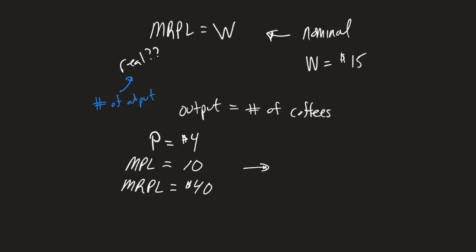Now let's say that we change that price. There's an increase in demand, so the price of a cup of coffee goes to $5. But let's say everything else stays the same. My marginal product of labor is 10 and my marginal revenue product of labor is now $50. Notice that I'm bringing in more money with this extra worker. However, they haven't become more productive — it's all through the actual level of the price.